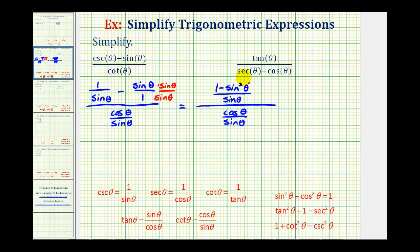Again, it doesn't look much better. Now that we have sine squared theta, we should see if we can perform a substitution using the Pythagorean identities. Often the substitution doesn't fit the form exactly as given — notice here we have one minus sine squared theta. Looking at the first equation, if we subtract sine squared theta on both sides, we get cosine squared theta equals one minus sine squared theta. So we can substitute cosine squared theta for one minus sine squared theta.